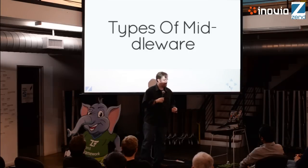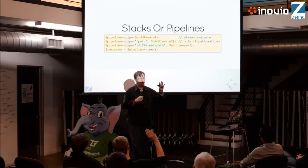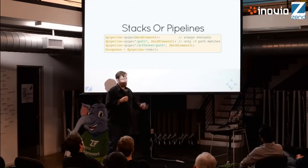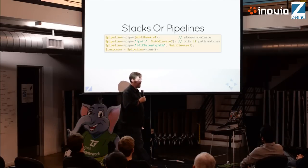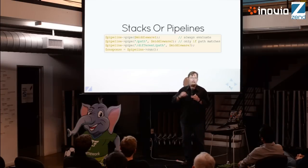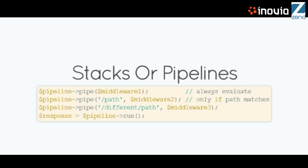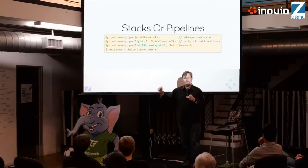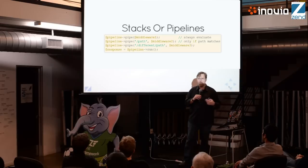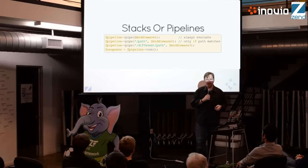When you have first-class HTTP support, a pattern called middleware arises. Middleware is code that sits between the request and the response — you have a request and response passed to it and you return a response. One type is stacks or pipelines. If you've done Node with Connect or Express, this will look familiar. We have a pipeline and pipe to one middleware; we might pass a path and say only execute if this path is matched, which is a nice optimization because you don't have to load everything up front — you only load if that path is matched.